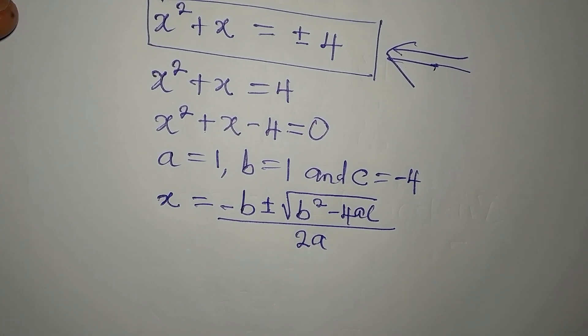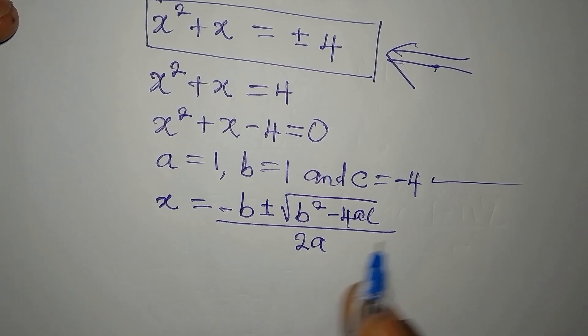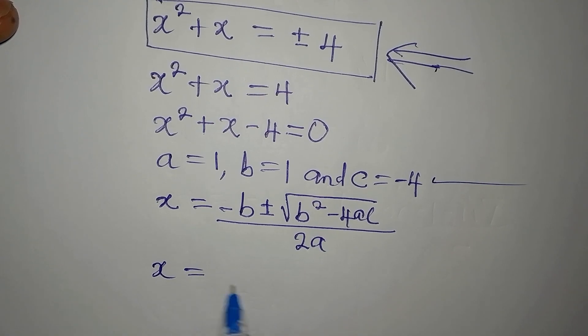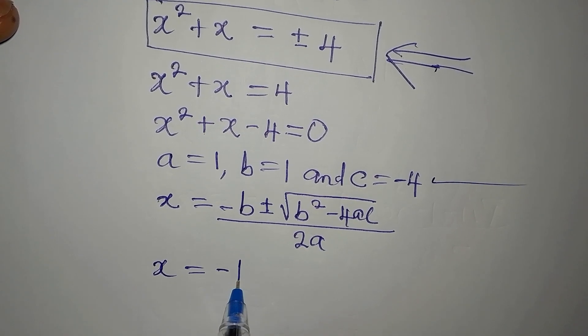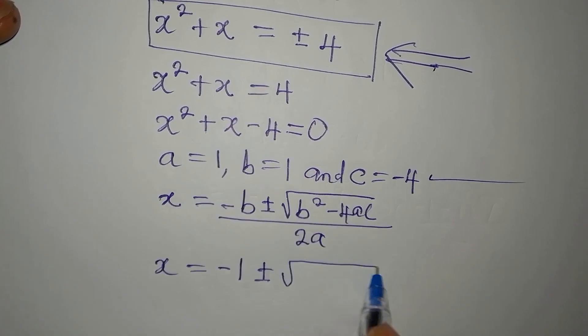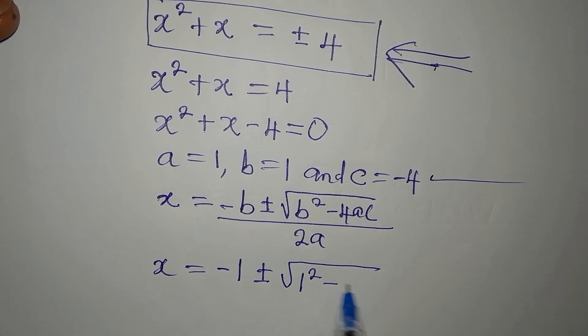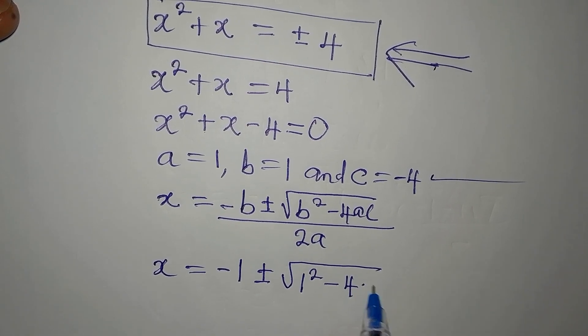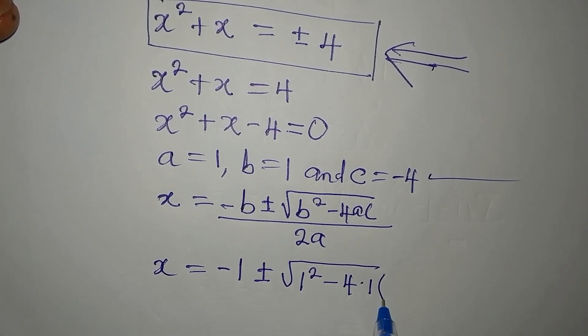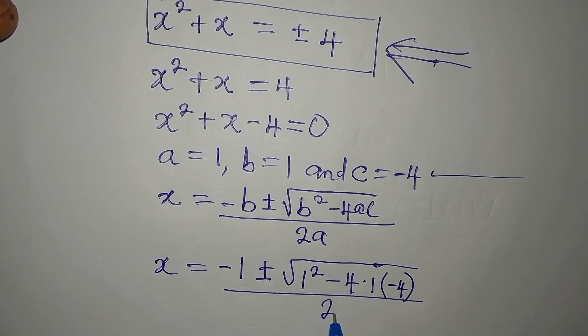Now, let's put these values into this formula so that x becomes minus 1, because b is 1, plus or minus the square root of b squared, which is going to be 1 squared now, minus 4 times 1 times c. Our c is minus 4. Then everything is over 2.